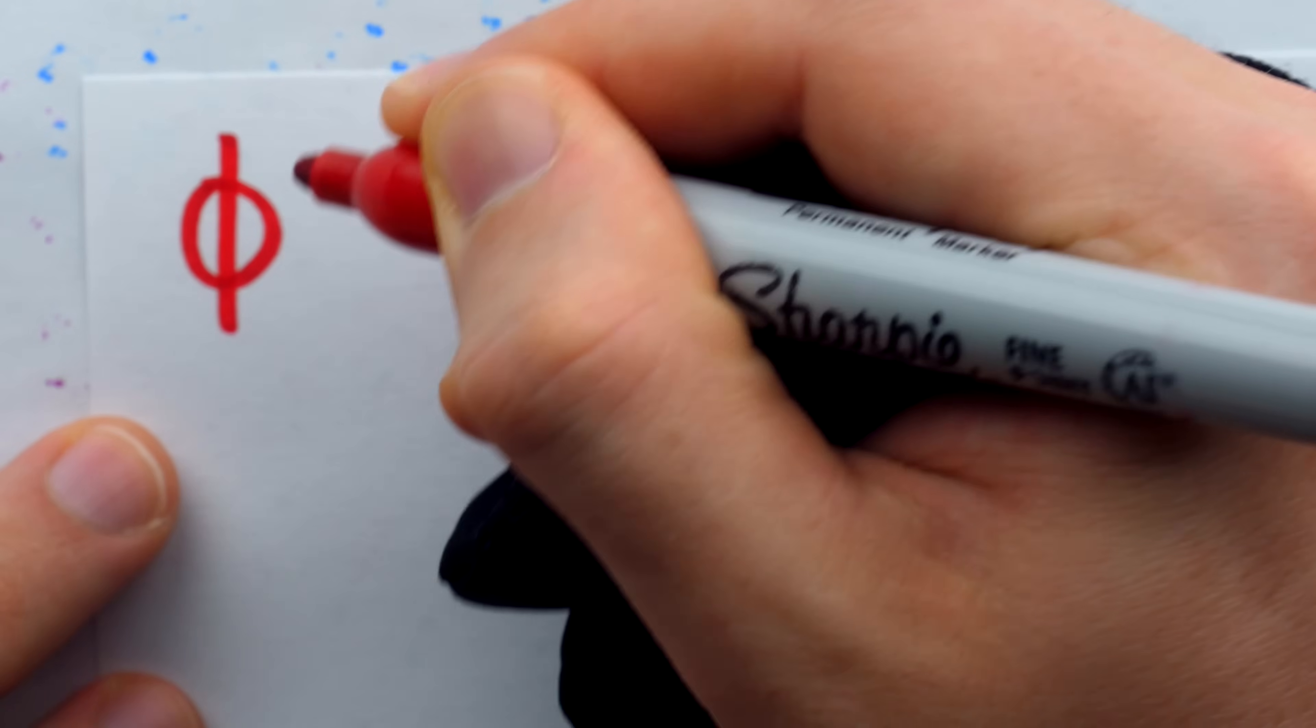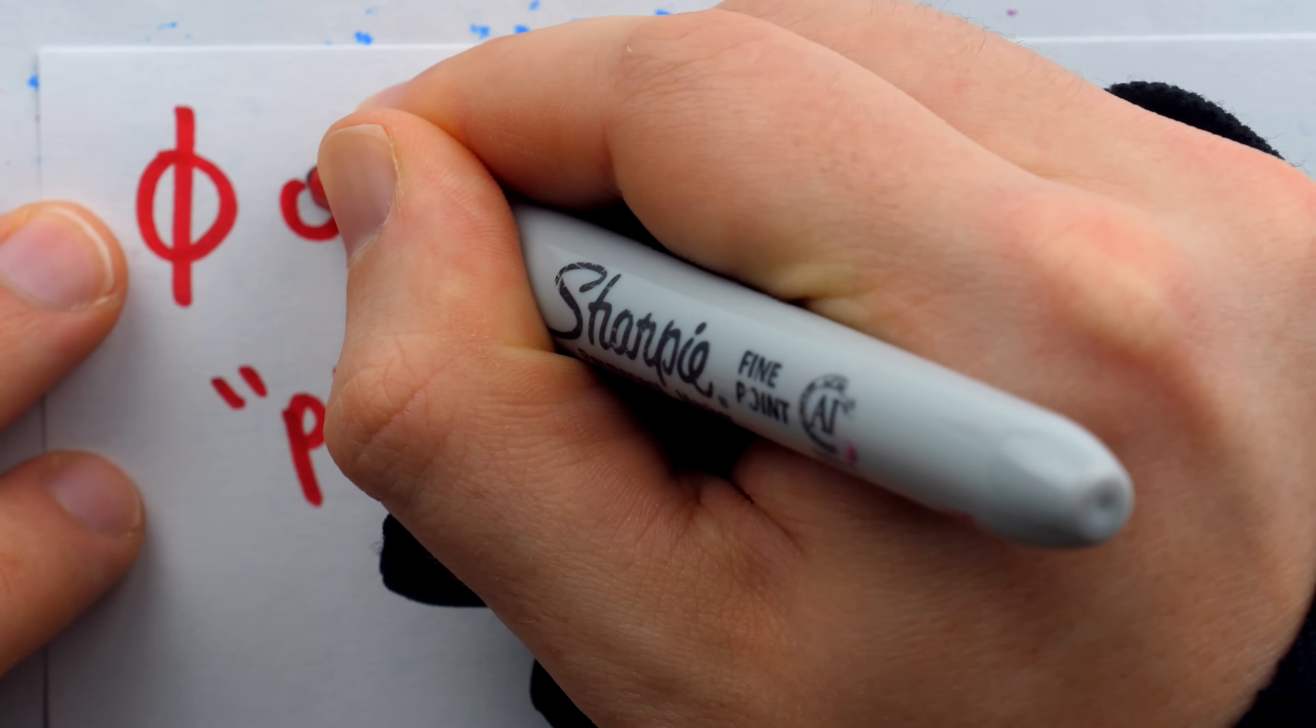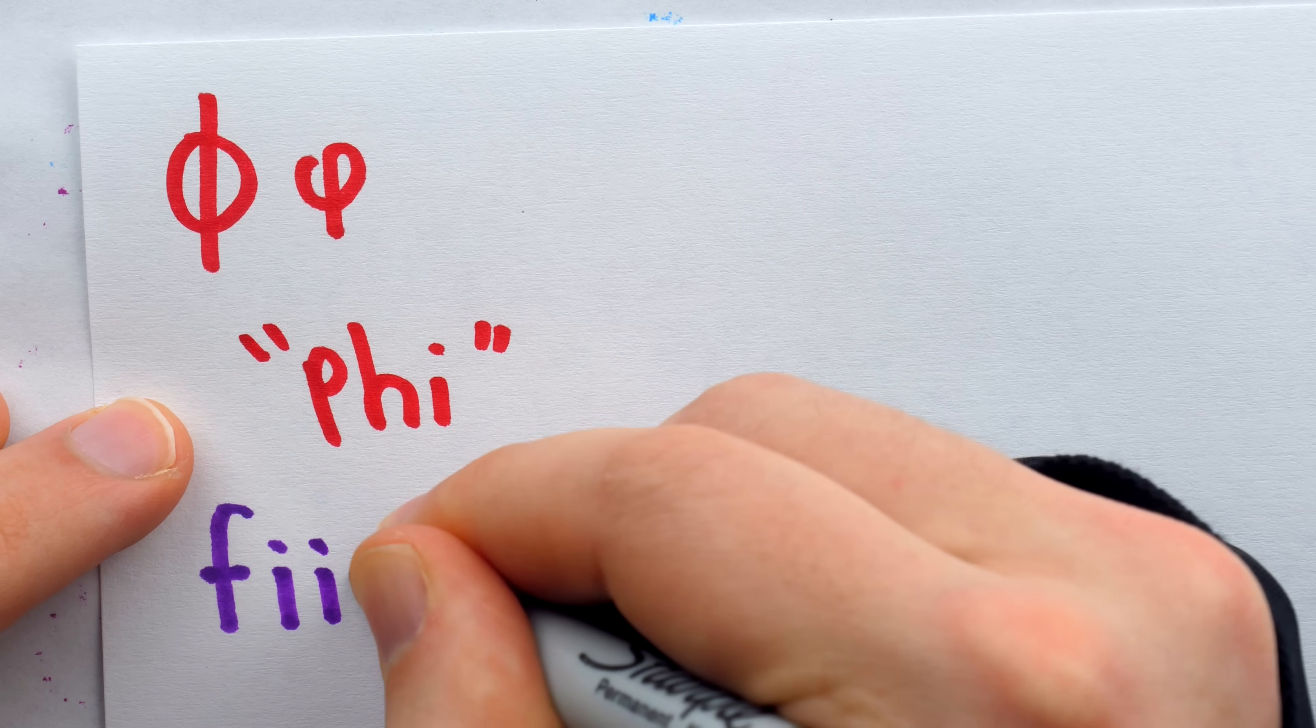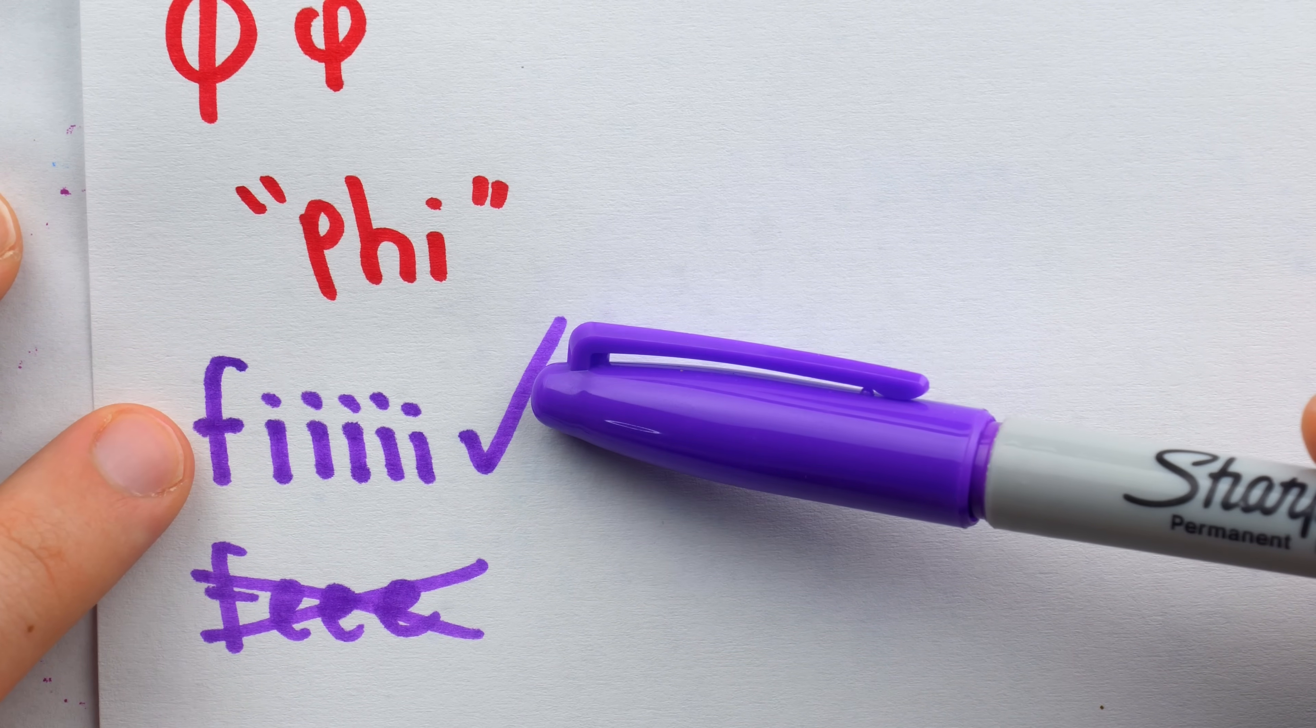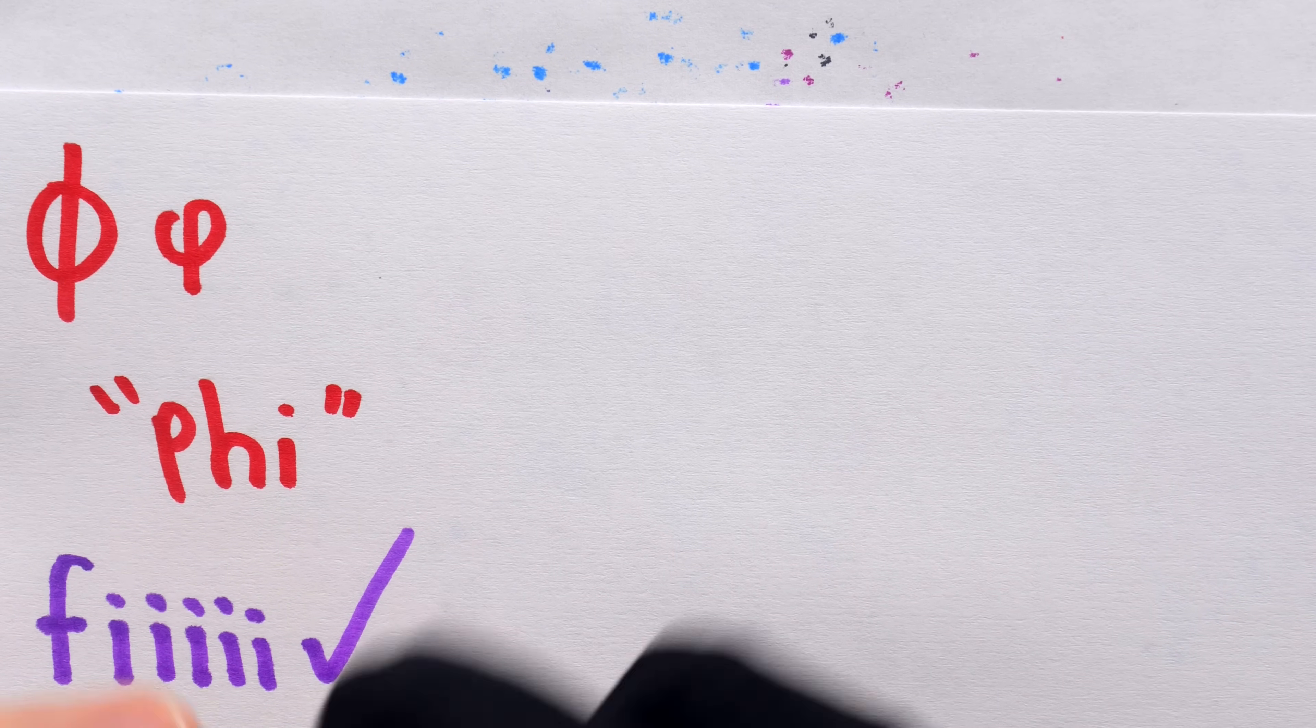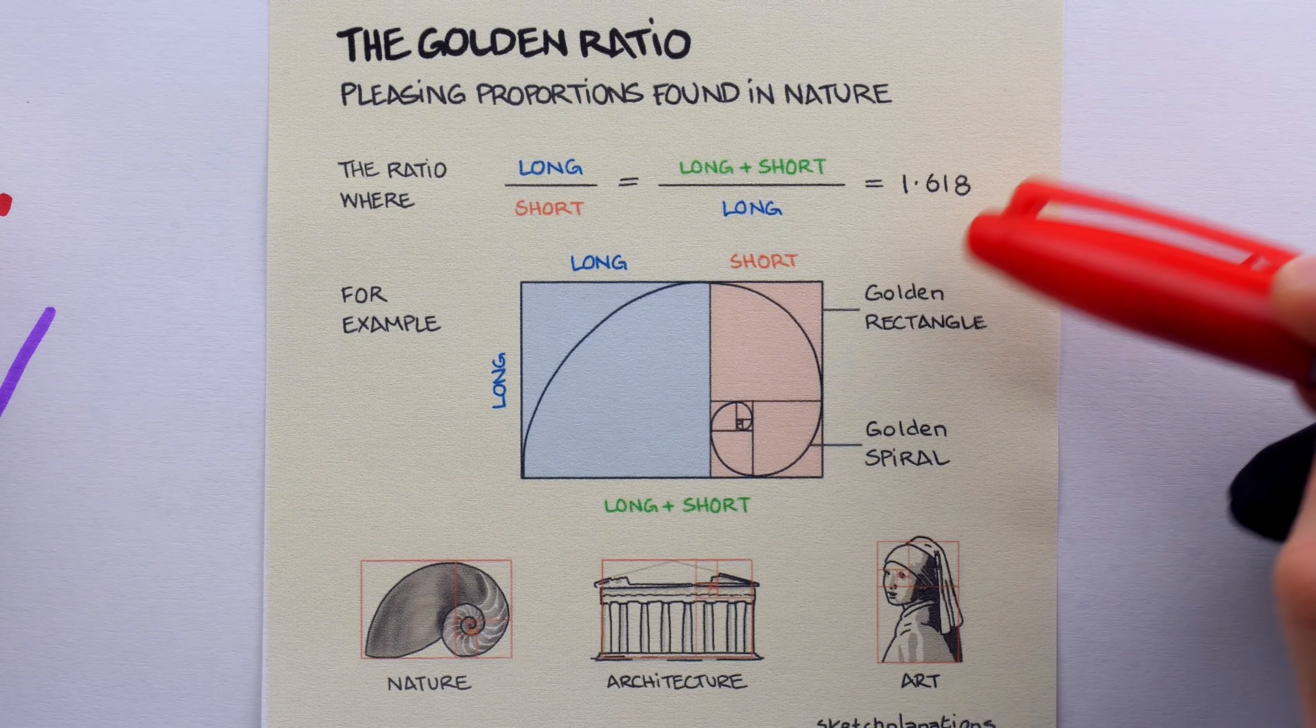The symbols or terms with controversial pronunciations are the worst because no matter how you say them, you're going to get people criticizing you. This is a Greek letter spelled like this and also sometimes written like this. But how do you say it? Is it phi or is it phi? And what does it have to do with math anyway? My recent research suggests that most people agree the pronunciation is with an I, right? It's phi, not phi. But there's certainly still plenty of disagreement.